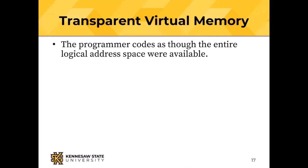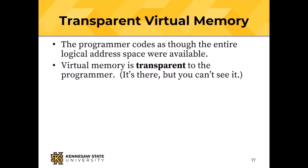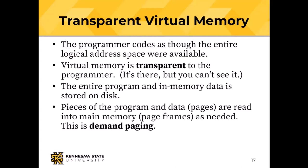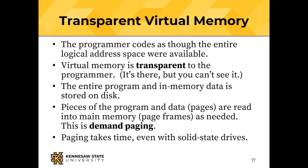Virtual memory is transparent — it's there but the programmer can't see it. Virtual means you can see it but it's not there. That's all managed by the operating system and the hardware. The entire program and all of the data is stored on disk — magnetic spinning hard disk or solid state drive. Pieces of the program and its data, those are pages, get read into page frames in main memory as they are needed. That's called demand paging. Paging takes time — even with solid state drives, there is a time penalty to be paid for paging.